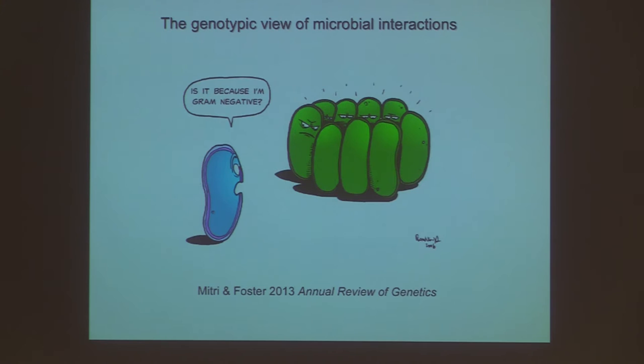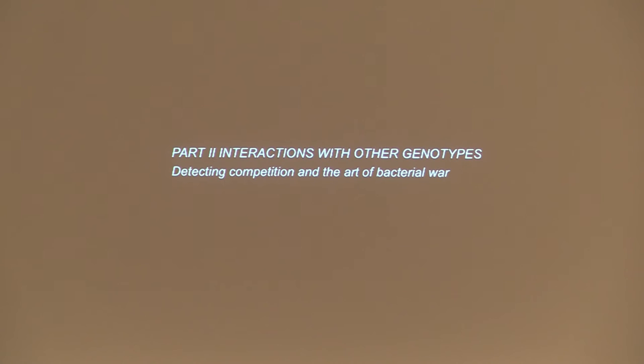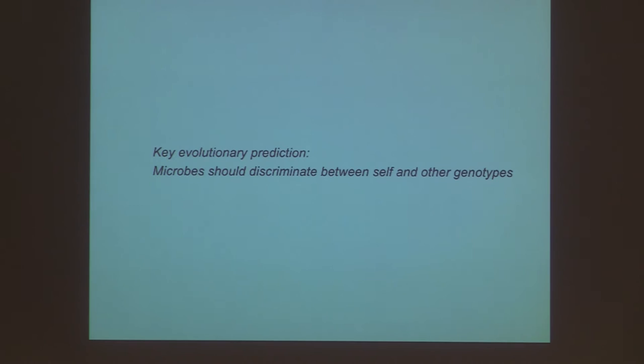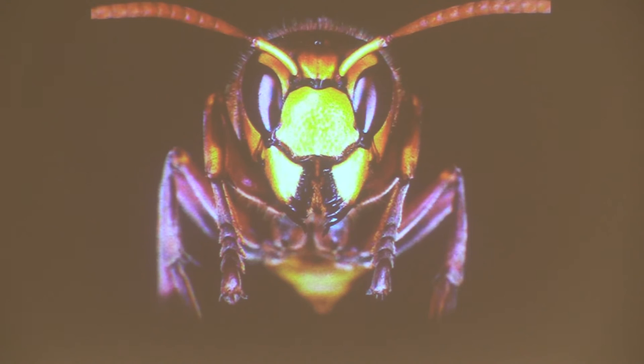For the next part of the talk, we explore what happens when you start to meet other genotypes, and how bacteria detect genotypes and fight. In a world of genetic diversity, microbes can't rely on having their clonemates around them all the time — they should have strategies to detect when there's a non-relative around. I started looking for this first with Dictyostelium, but the more interesting messages come from bacteria.